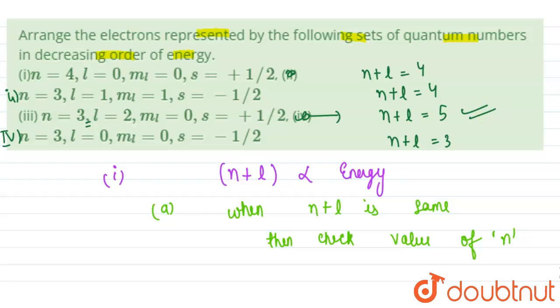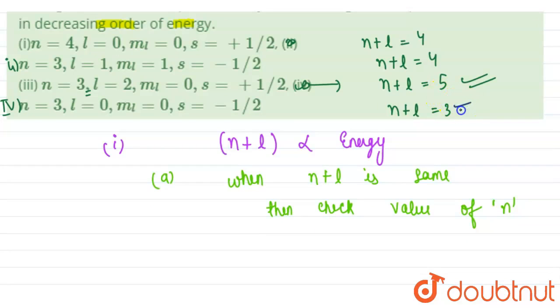So among them, the highest n plus l value is of third, so our third will have the most energy and least energy will be of last.